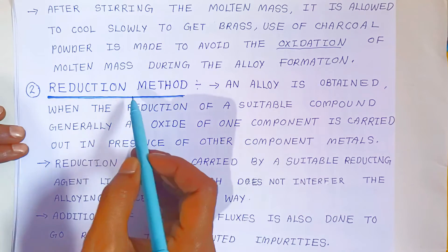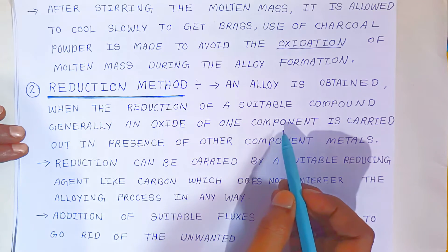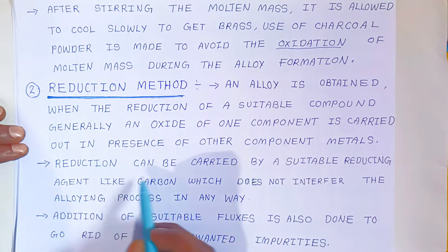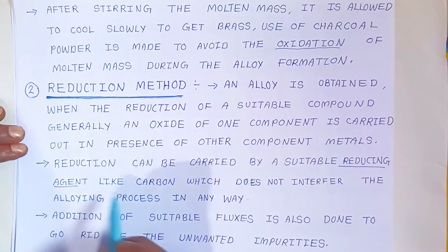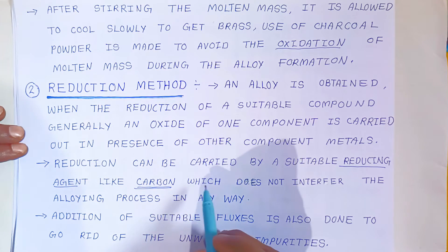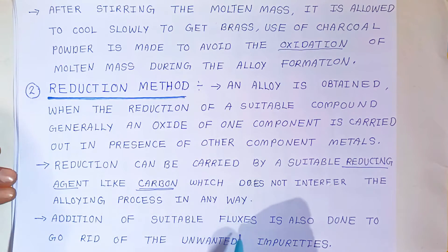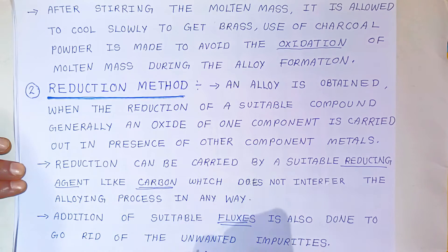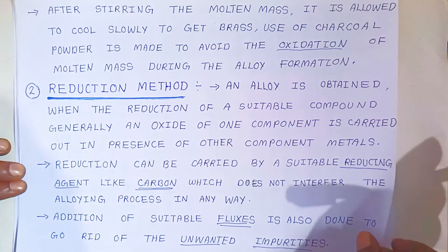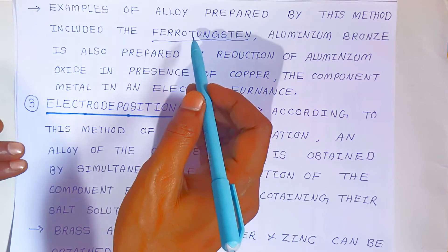In the reduction method, an alloy is obtained when the reduction of a suitable compound — generally an oxide of one component metal — is carried out in the presence of other component metals. The reduction is carried out using a suitable reducing agent like carbon. Carbon is an important reducing agent used to reduce the metal oxide, and it does not interfere with the alloying process. Addition of suitable fluxes is also done to remove unwanted impurities. An example of an alloy prepared by this method is ferro tungsten.